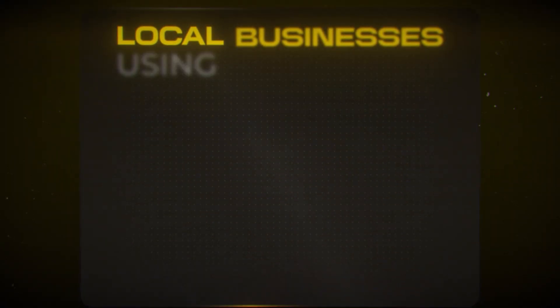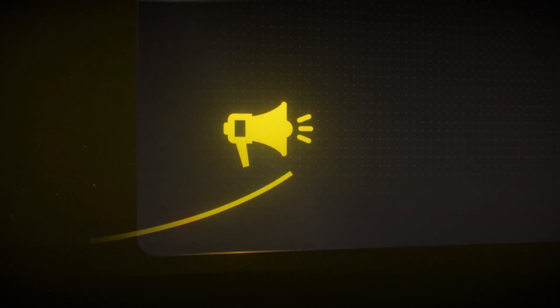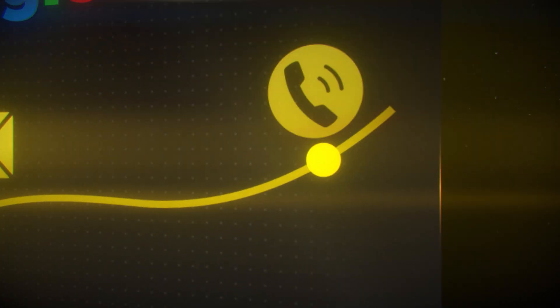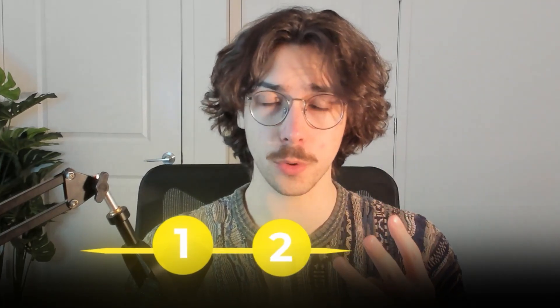In this video, I'm going to be showing you how you can scrape local businesses using Google Maps so you can run outreach campaigns to them — cold email campaigns, cold calling campaigns, or use it for whatever you really want. I'm also going to show you how you can grab their emails, their phone numbers, and any additional data so you can actually run outreach campaigns towards these people.